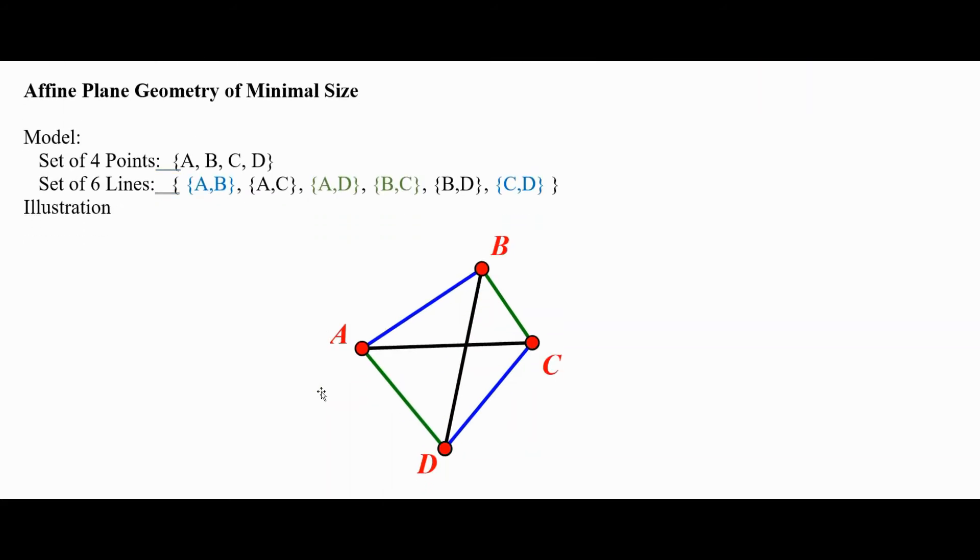Here it is. The set of four points are A, B, C, and D. The set of lines are any pairs of those: {A, B}, the set containing A and C, the set containing A and D, and so forth. We have six of those lines. And here's an illustration for it.